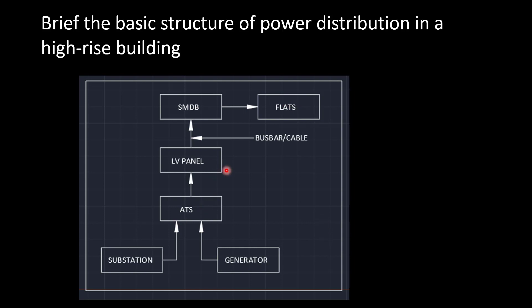From substation and generator, the power flows through the LV panel via ATS, then LV panel to sub-main distribution board (SMDB), and from SMDB to flat DBs or final distribution boards. This is a block diagram of a typical residential high-rise building. The ATS and LV panel will be situated in the main electrical room or LV room, either in the first basement or on the ground floor. SMDBs will be situated in the respective electrical rooms on different floors, and flat DBs will be placed inside the flat.